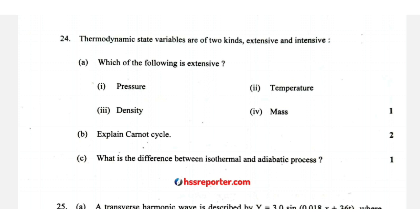In the 5th session: thermodynamic state variables are of two kinds — extensive and intensive. The thermodynamic processes include isothermal expansion, adiabatic expansion, isothermal compression, and adiabatic compression. In an isothermal process, PV equals constant. In an adiabatic process, there is no exchange of heat between the system and surroundings.